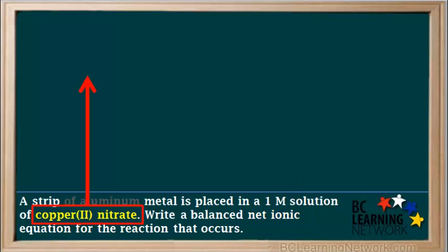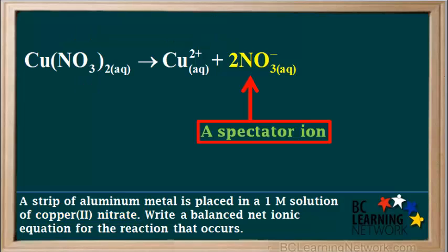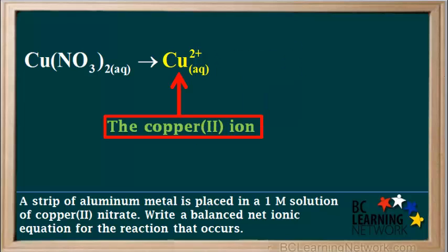Our solution is copper 2 nitrate, and we can write its dissociation equation here. Cu(NO₃)₂ breaks up into Cu²⁺ and 2 NO₃⁻. The nitrate ion NO₃⁻ only appears on the reduction table when it's combined with H⁺ ions. Since there are no H⁺ ions in this reaction, the nitrate ion can be considered a spectator ion and can be discarded. So the active ion from this solution is the copper 2 ion.